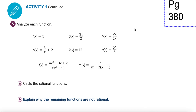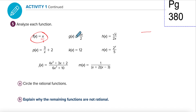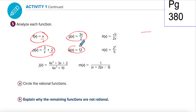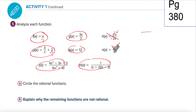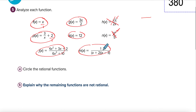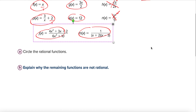On page 380, we need to circle all the rational functions. Remember: rational functions are a polynomial divided by a polynomial. Is this a polynomial divided by a polynomial? Yes, it's divided by one — that works. How about this one? Divided by one — that works too. Here it's very obvious: polynomial divided by polynomial. That one is not a polynomial — it would not work. That one would not work either.